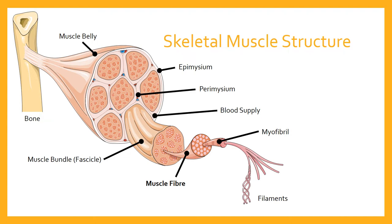Welcome to our lesson on muscle fibre types. To recap quickly skeletal muscle structure, so we can be clear about what we're talking about today. You can see from the diagram that a muscle is made up of bundles of smaller elements. The muscle that is attached to the bone and the sheath that runs around it is known as the muscle belly.